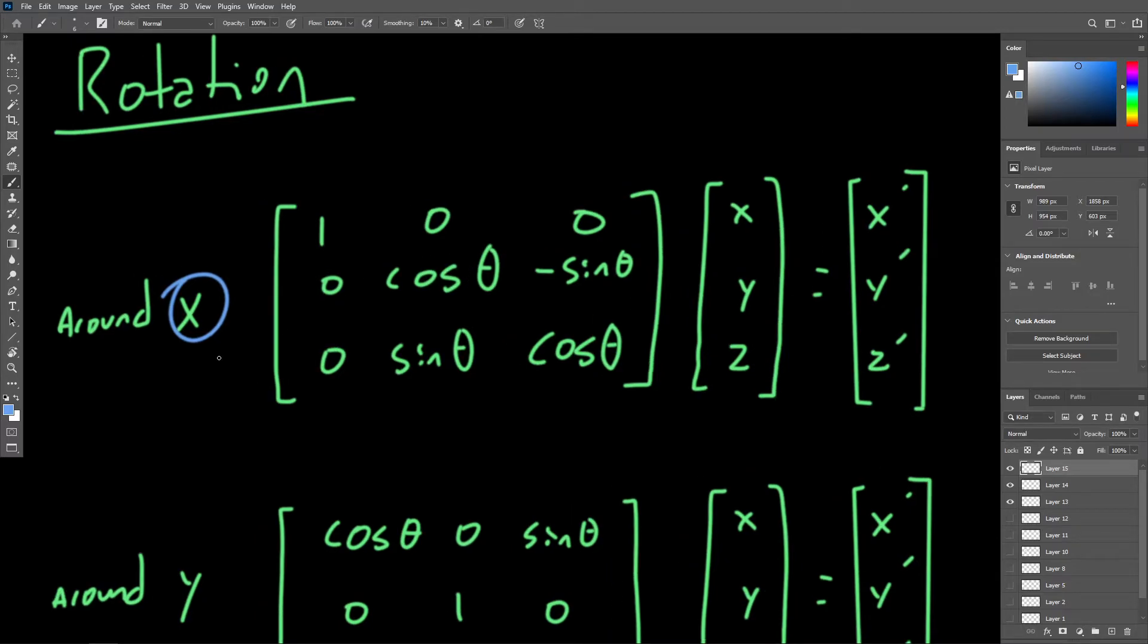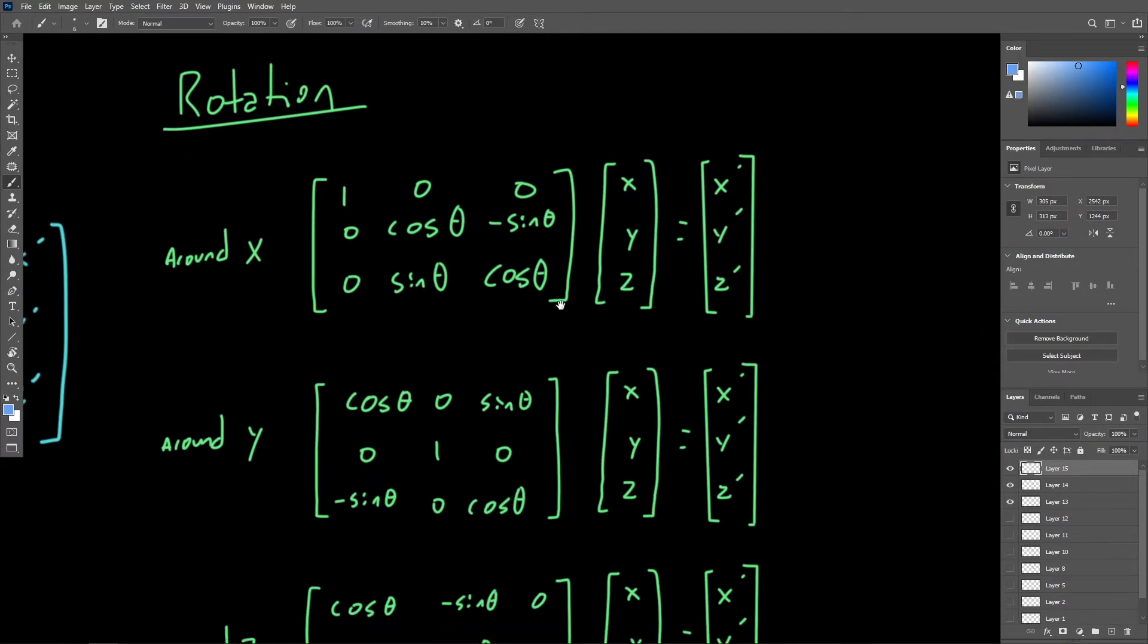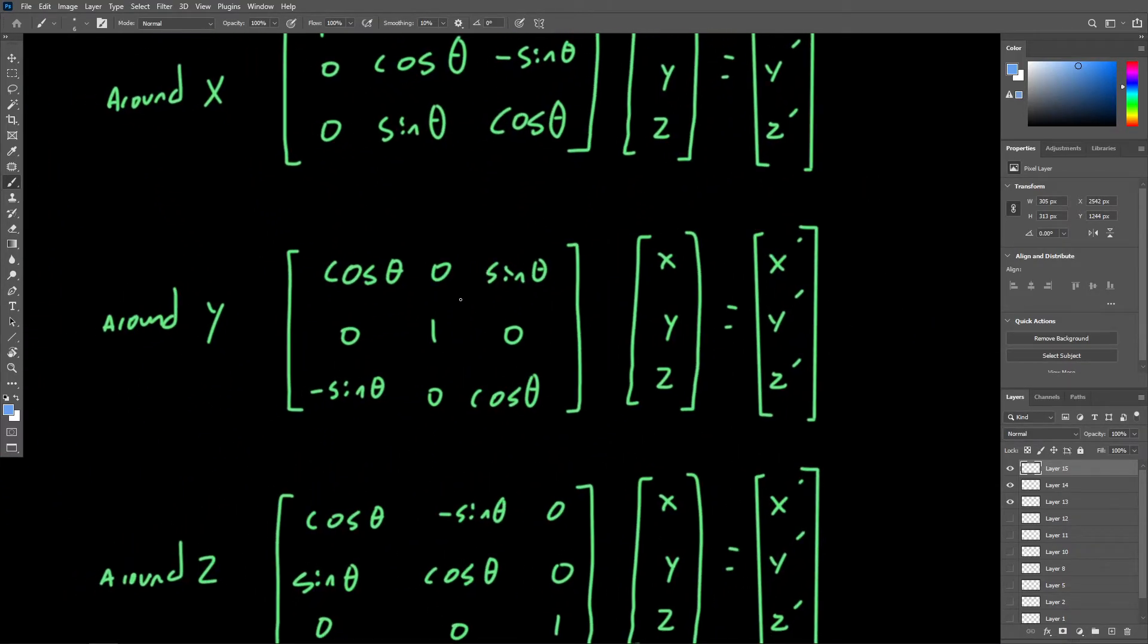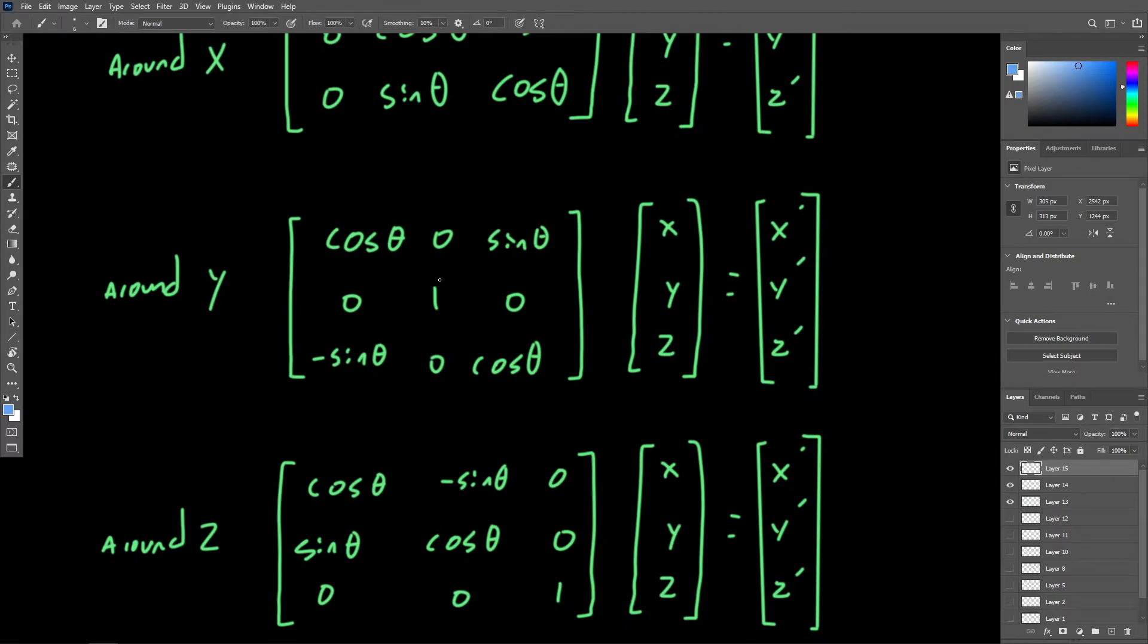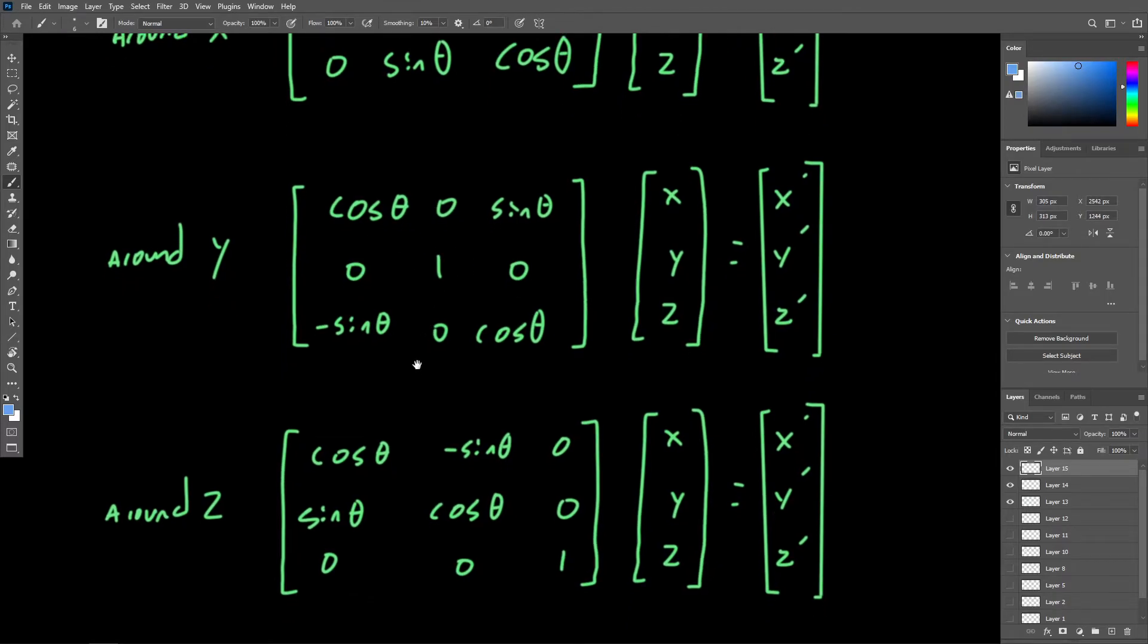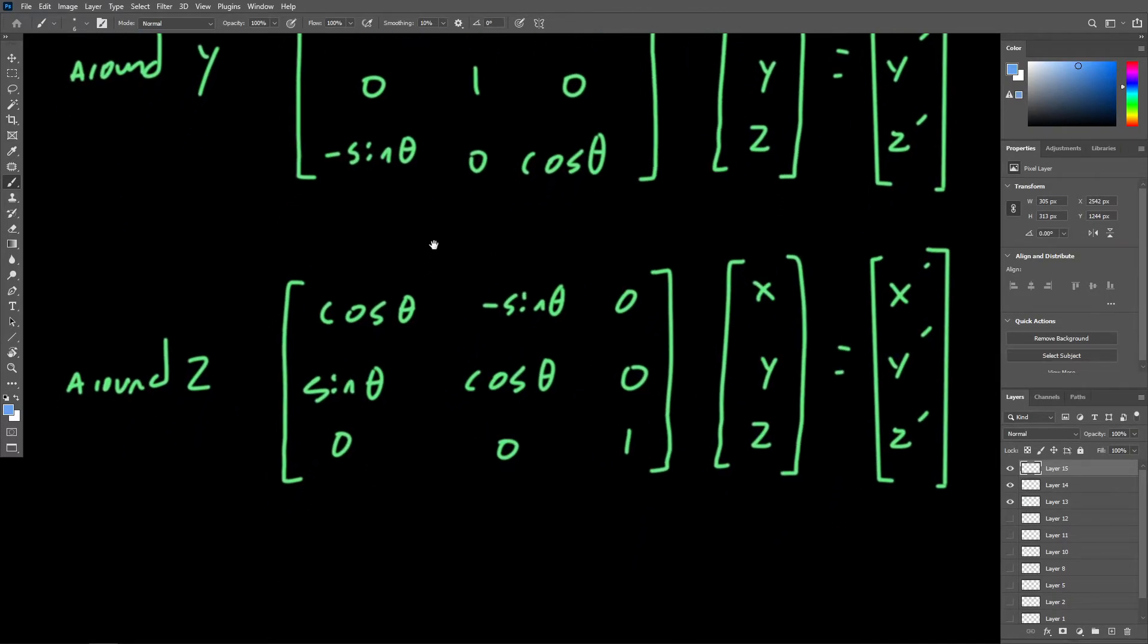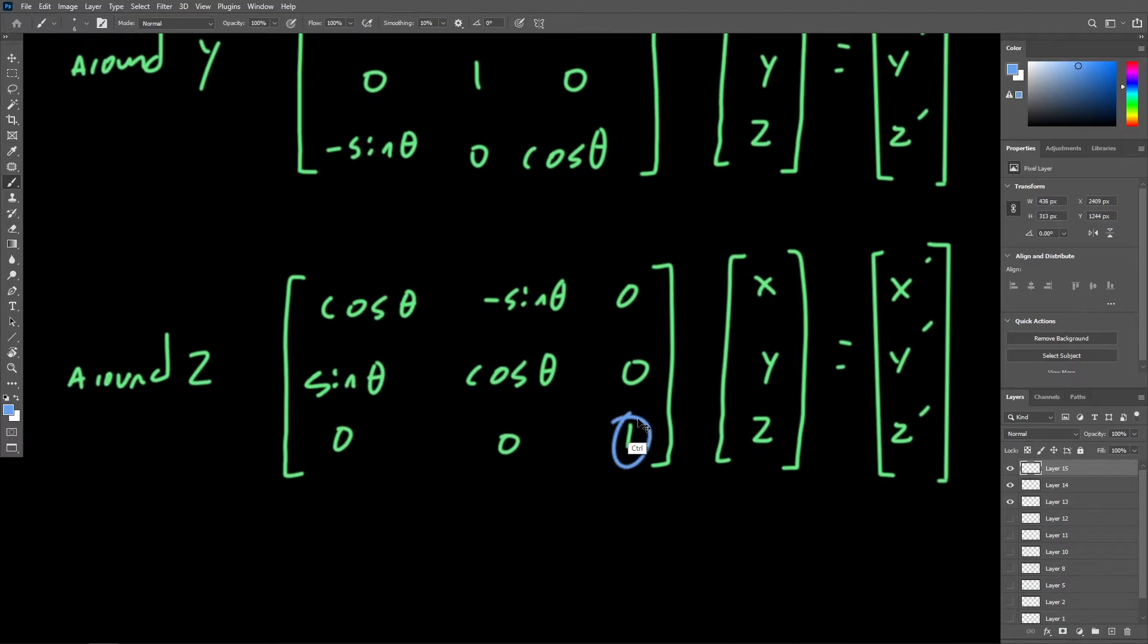So for rotation around x, we would use this formula. For rotation around y, it's a bit different. Of course, nothing changes on the y-axis. We change this set of values here kind of surrounding the y component. And for the z-axis, we leave the z-axis unchanged and change these components.